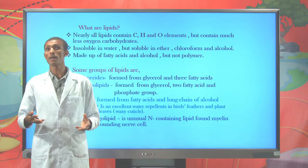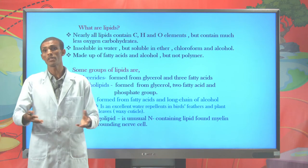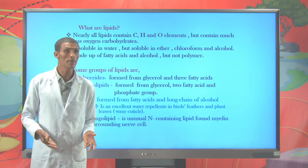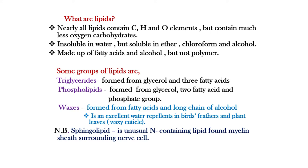Do you know what lipid means and how lipid can be differentiated from carbohydrates? Nearly all lipids are made from the elements carbon, hydrogen, and oxygen, just like carbohydrates, but the proportion of oxygen is less. Lipid is insoluble in water but soluble in non-polar molecules like ether, chloroform, and alcohol. Lipid is made from its monomers — fatty acids and alcohol — but it is not a polymer. Lipids include triglycerides, formed when one glycerol and three fatty acid molecules become esterified together.